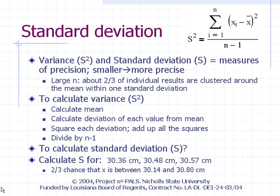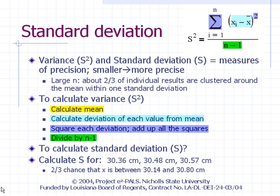The standard error of the mean is typically used to explicitly quote the uncertainty of the average of several measurements. It can be calculated from the standard deviation, which is the square root of the variance. To calculate the variance, first calculate the mean, then calculate the deviation of each individual value from the mean, square each deviation, add them all up, and divide by n minus 1, where n is the number of trials. The standard deviation is simply the square root of the variance.